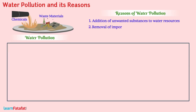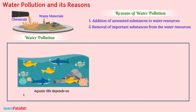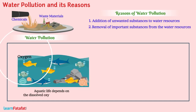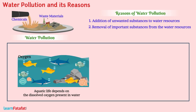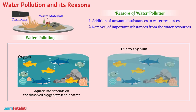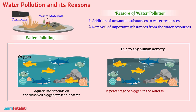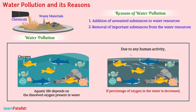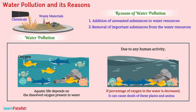Another reason is the removal of important substances from water resources. Aquatic life depends on the dissolved oxygen present in water. Due to human activity, if the percentage of oxygen in the water is decreased, it can cause the death of these plants and animals.